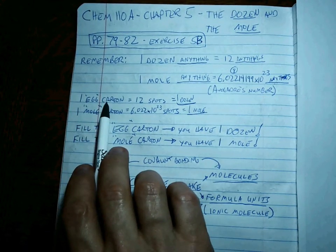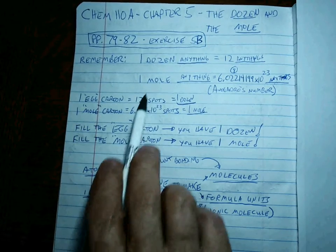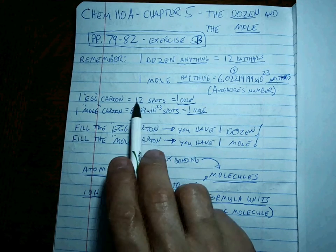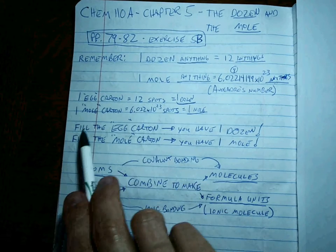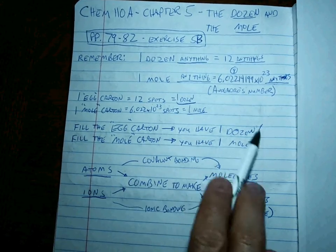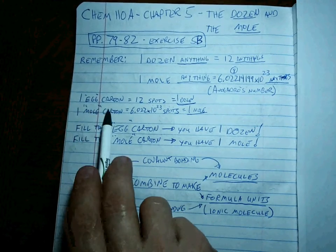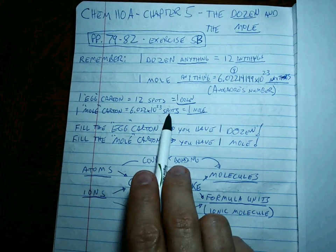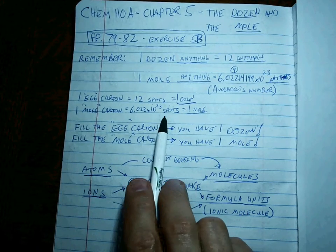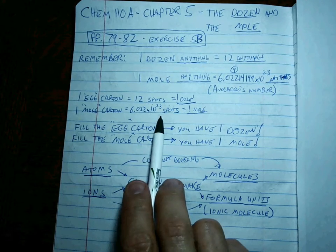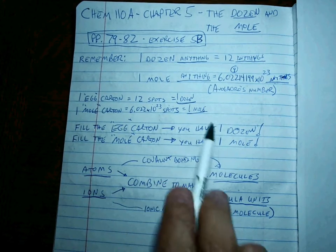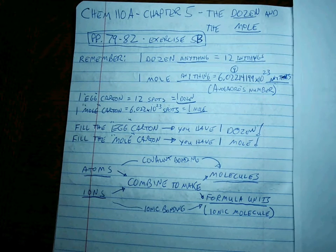I like thinking of it in terms of an egg carton. I open up an egg carton and there are 12 spots where I can put one piece of whatever it is I'm counting — M&Ms, marbles, eggs, or whatever. If I fill all 12 spots and close the carton, I have one dozen. Well, if I have a mole carton, I open it up and I have 6.022 times 10 to the 23rd spots. I stick a marble in each or a sodium atom in each, and when I close that carton after they're all full, I've got one mole of whatever it is I'm counting. No big deal.